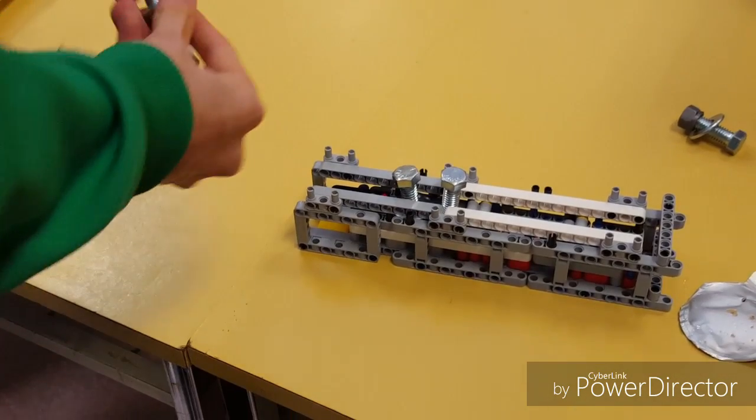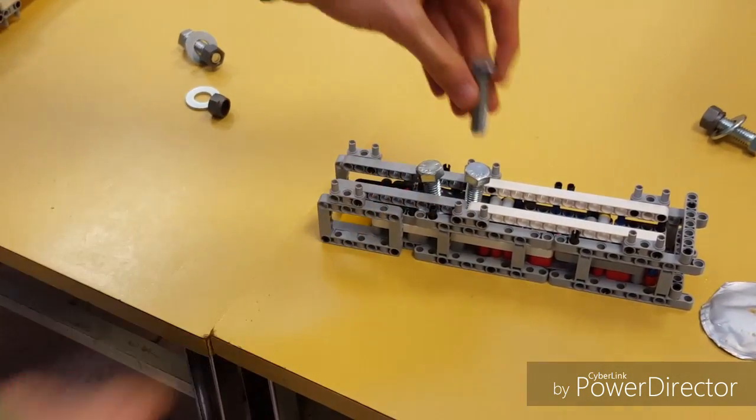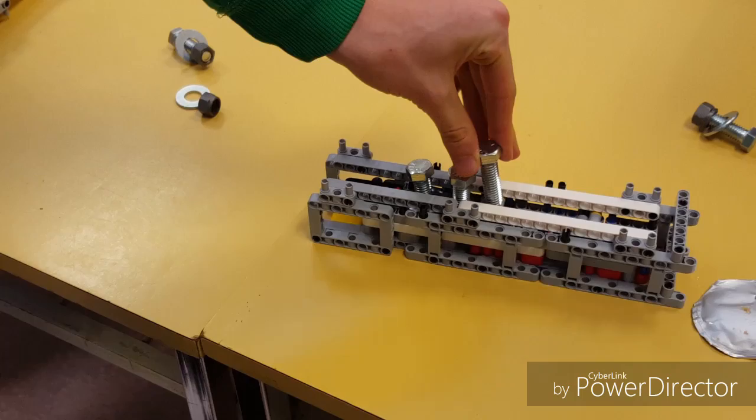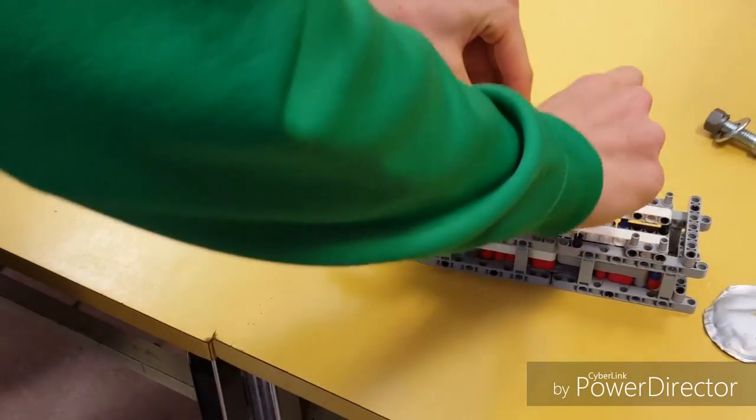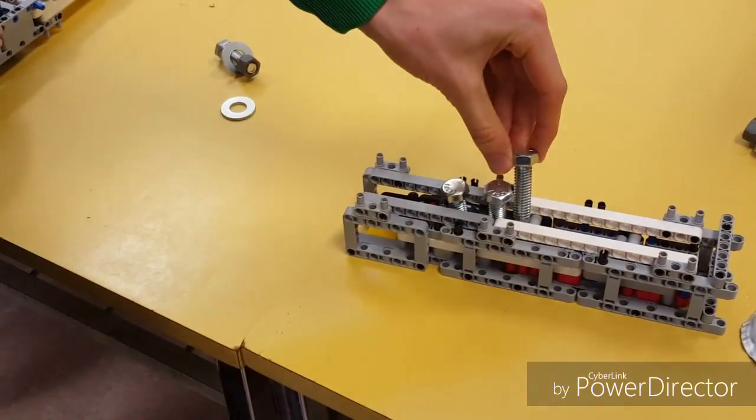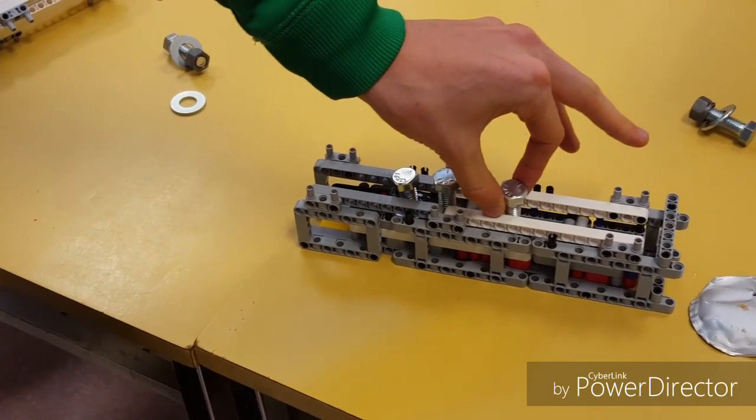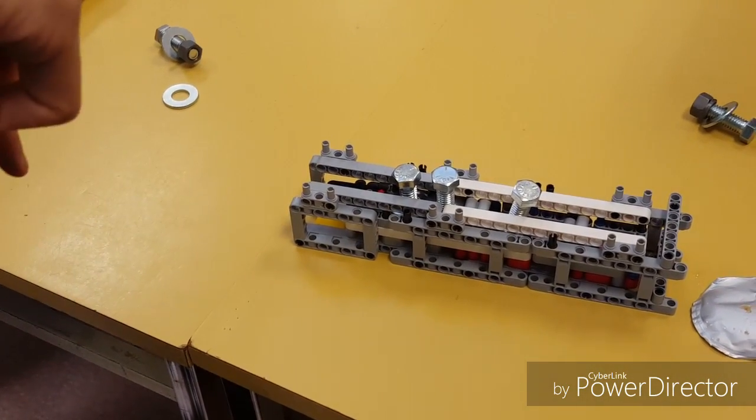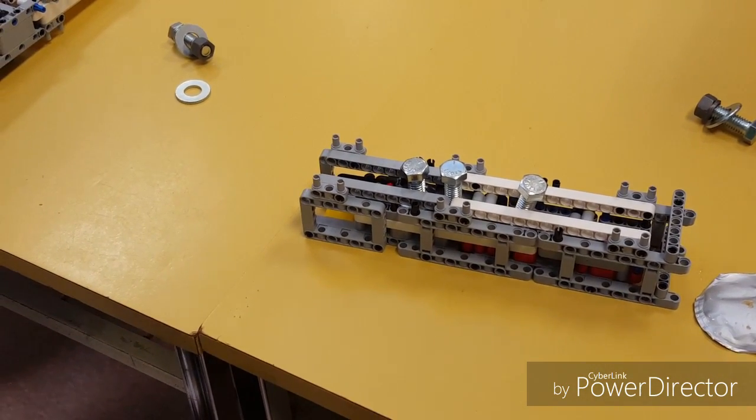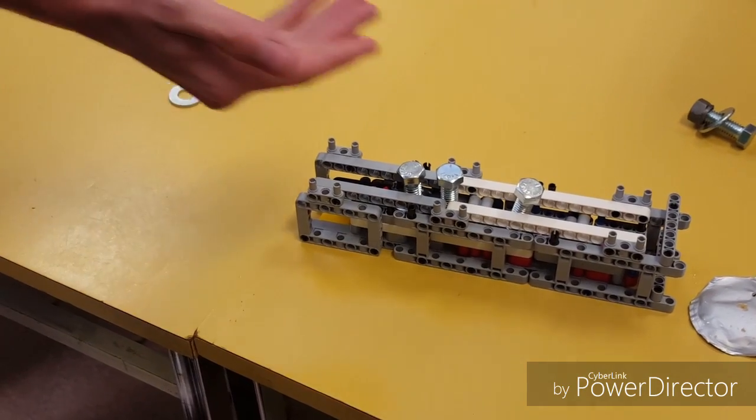And then when the next one comes, it'll go across and hit the barrier that we have here to separate the groupings. And then it will keep going along until it drops down into there. So it's kind of just like dragging it across until it falls into place. That's sort of what our idea was.